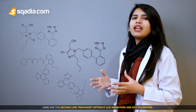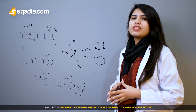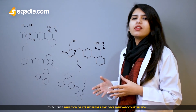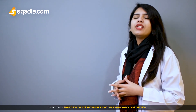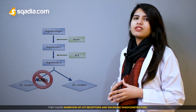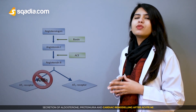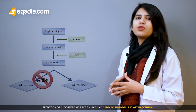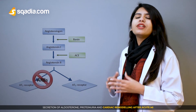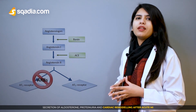ARBs are the second-line treatment option if ACE inhibitors are not tolerated. They cause inhibition of AT1 receptors and decrease vasoconstriction, secretion of aldosterone, proteinuria, and cardiac remodeling after acute MI. ARBs may also cause angioedema and hyperkalemia.